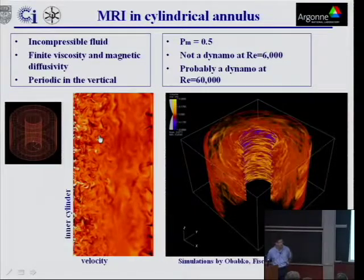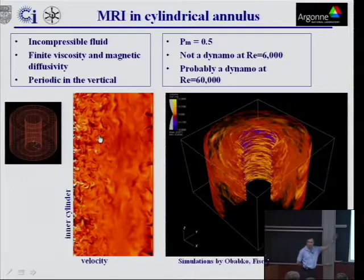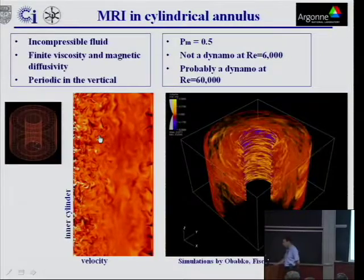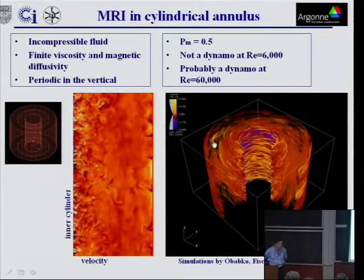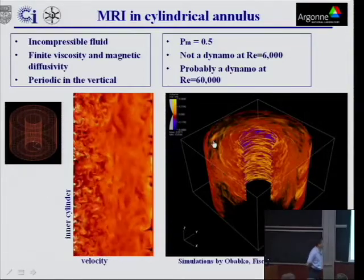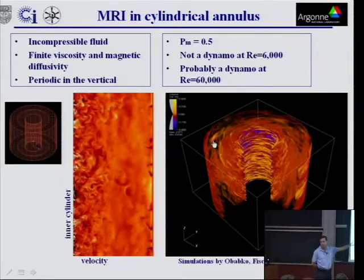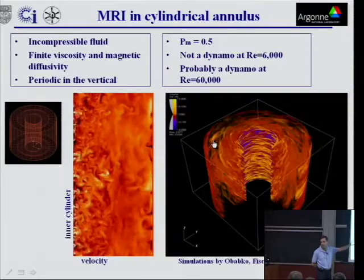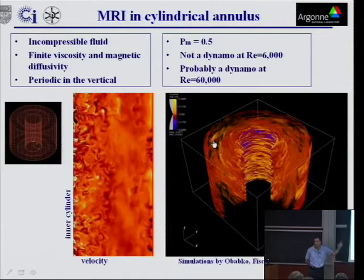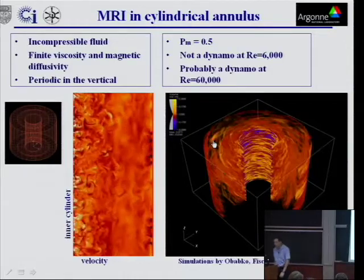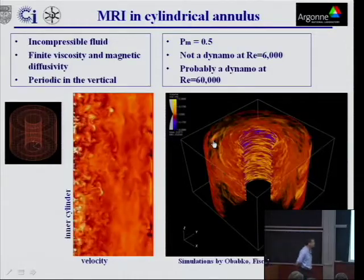And indeed it does, and hopefully this afternoon we'll actually see the sort of experimental manifestation of this thing when we go and see the lab. But to give you some idea what it would do, of course this is in completely the wrong parameter regime for the experiment. This has got very high magnetic Reynolds number, and not so large Reynolds number, which is completely wrong for gallium.